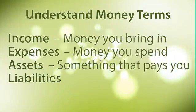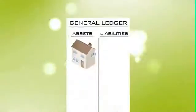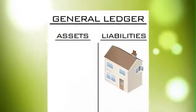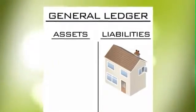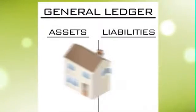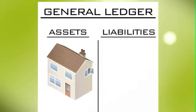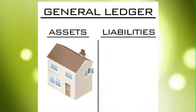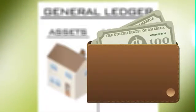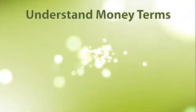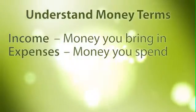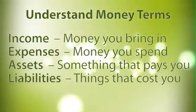Liabilities is the last definition and is defined as things that cost you. A house is typically viewed as an asset, but can it actually be a liability? Yes. By the definition I used earlier, anything that costs you money is a liability, not an asset. But yes, a house can be considered an asset — when it pays you money. If you were to buy a house and rent it out and it paid you a positive cash flow every month, that would be considered an asset. To recap: income is money you make, expenses are money you spend, an asset pays you, and a liability costs you.